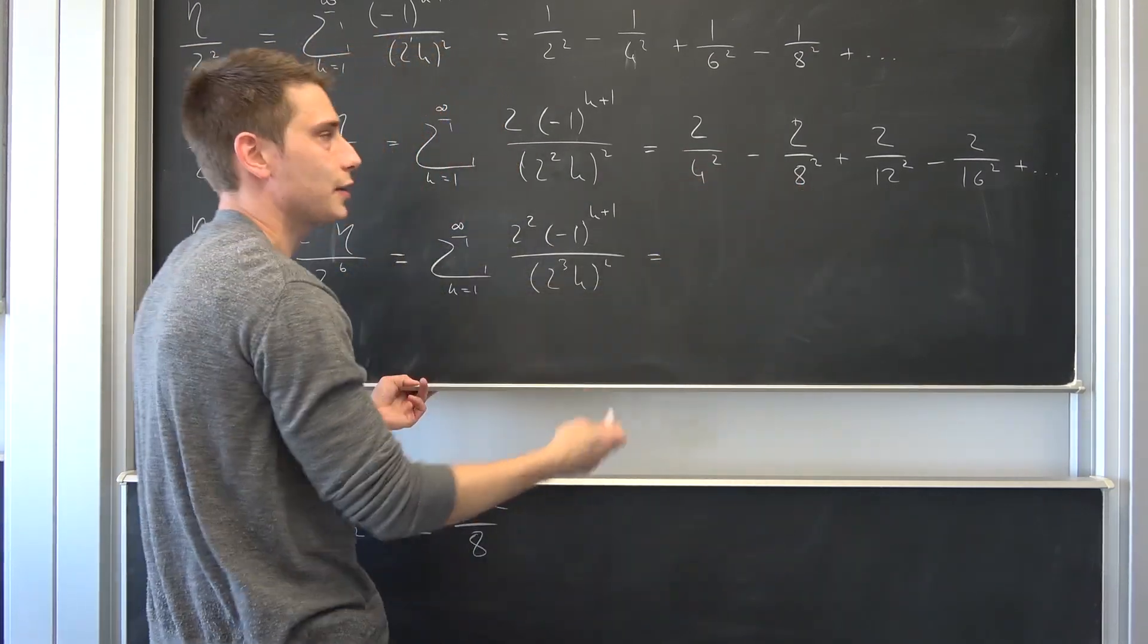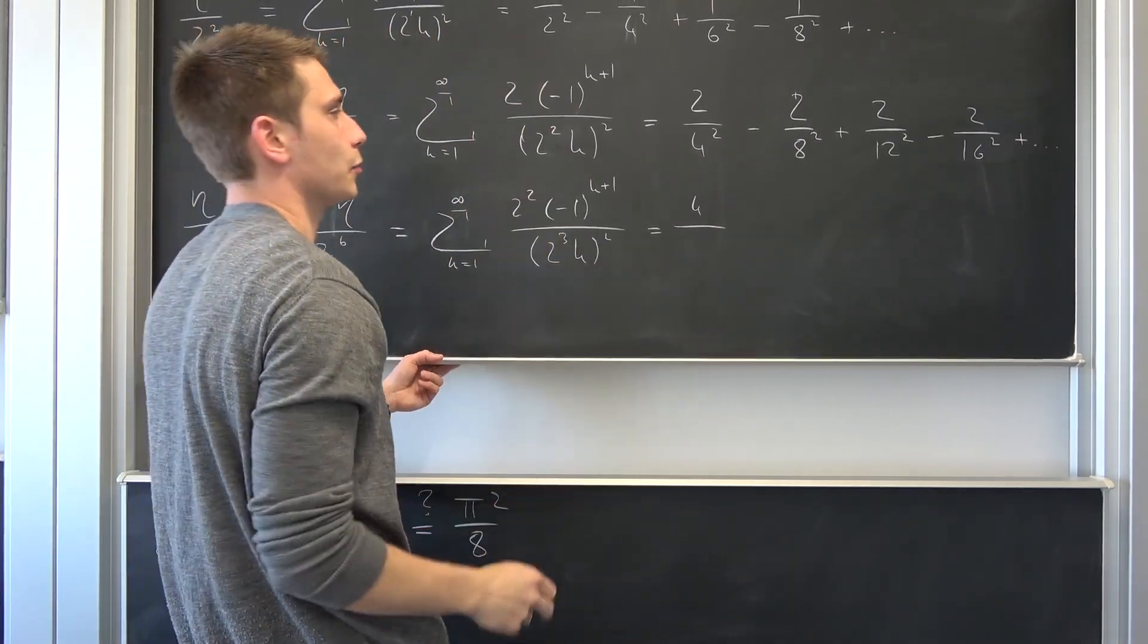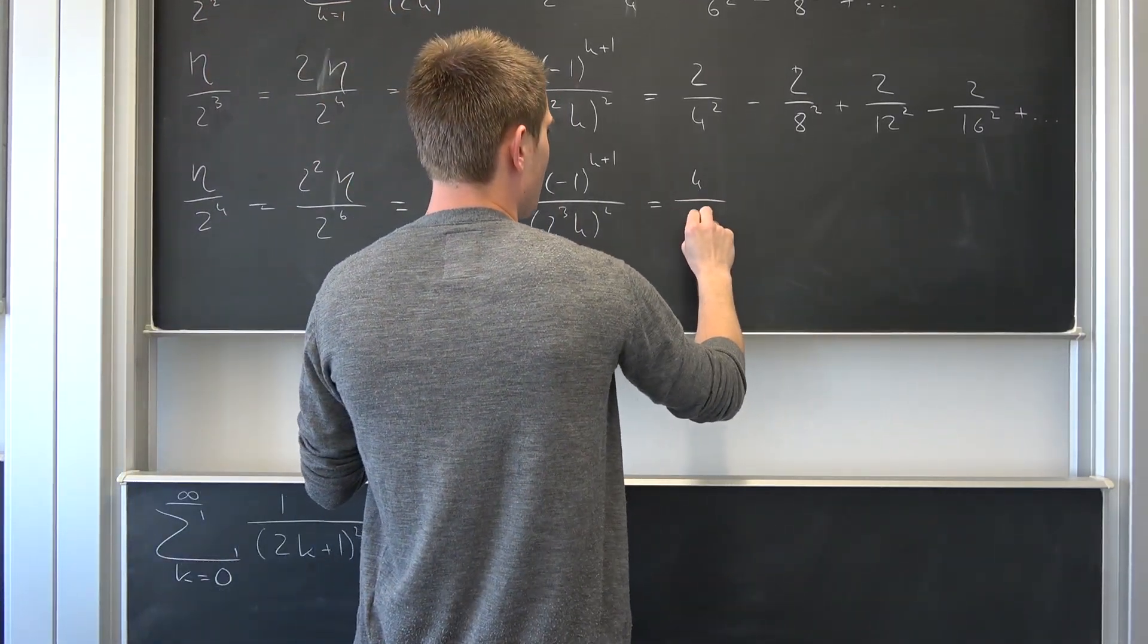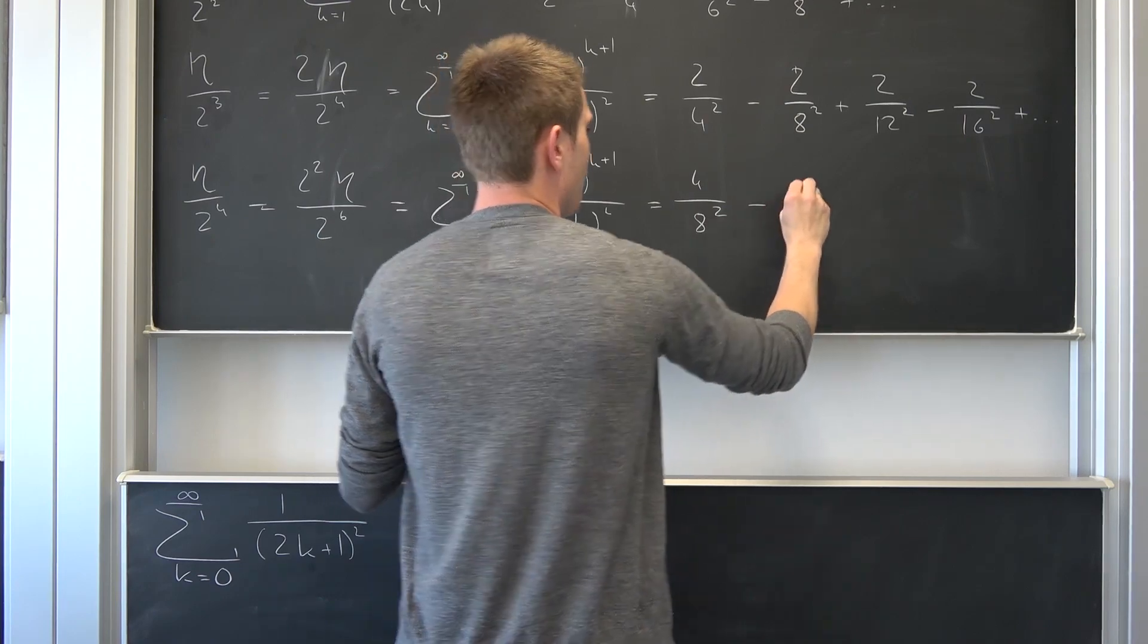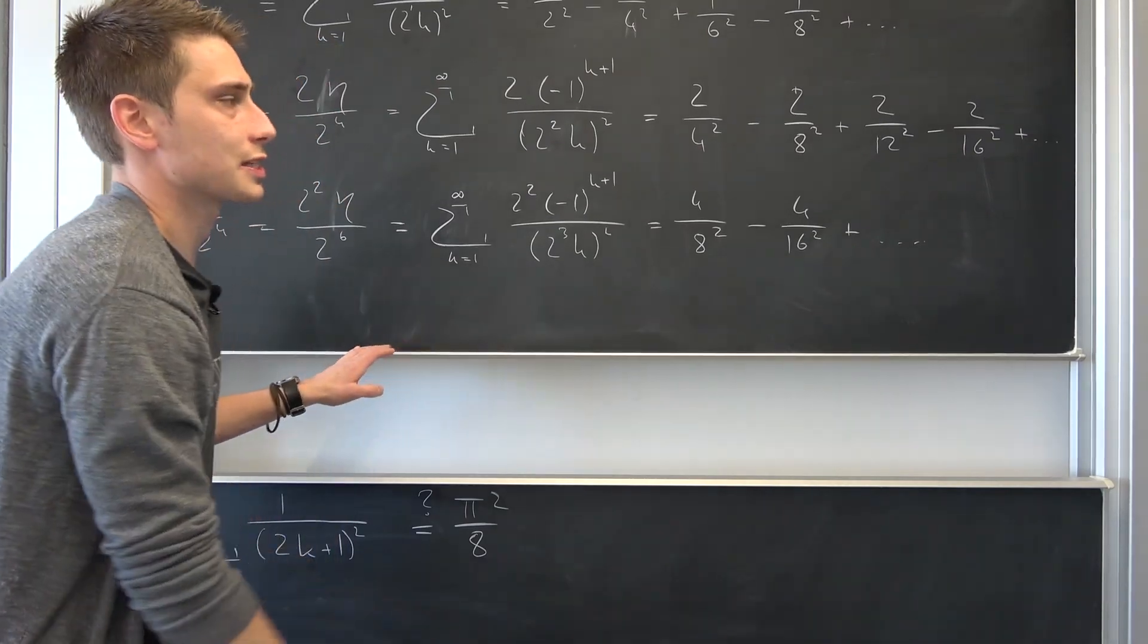everything right here, down here multiplied by 2, those factors end up here by 2. So this is 4, because 2 squared is 4 in the natural numbers. Now we have 8 squared minus 4 over 16 squared plus da da da. Never mind about those rest terms.